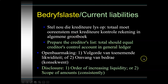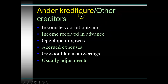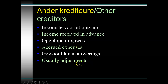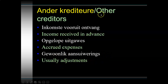Disclosure is of the utmost importance. Other creditors include income received in advance - I've already received the income but haven't fulfilled my obligation, so it is a liability. If I'm not going to fulfill my commitment, I have to repay the money. Accrued expenses: I've already received the benefit of the expense but haven't paid yet, so I recognize the expense with a corresponding credit to accrued expenses. Things like interest payable - accrued interest charges - should also be shown as accrued expenses.